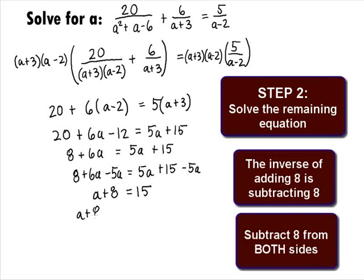It looks like we have the constant term of 8 to move. The inverse of plus 8 is to subtract 8 from both sides, so we'll get a plus 8 minus 8 equals 15 minus 8. On the left side, the 8's cancel and we have a equals and on the right side, 15 minus 8 will give us 7.